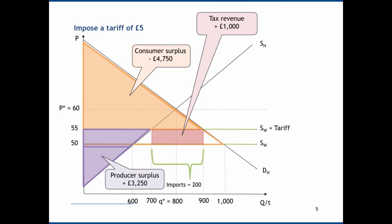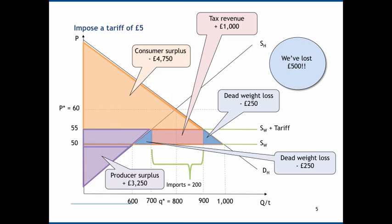So we have an interesting before-and-after: consumer surplus has fallen, but that's partially offset by the rise in producer surplus and the gain in tax revenue. Crucially, however, we've lost £500. There are some gainers and some losers, but something is missing. That missing £500 is located in two blue triangles — the deadweight loss. Not only have consumers been made worse off, but the benefits to producers and tax revenue are smaller than the losses to consumers, and the difference is this deadweight loss.